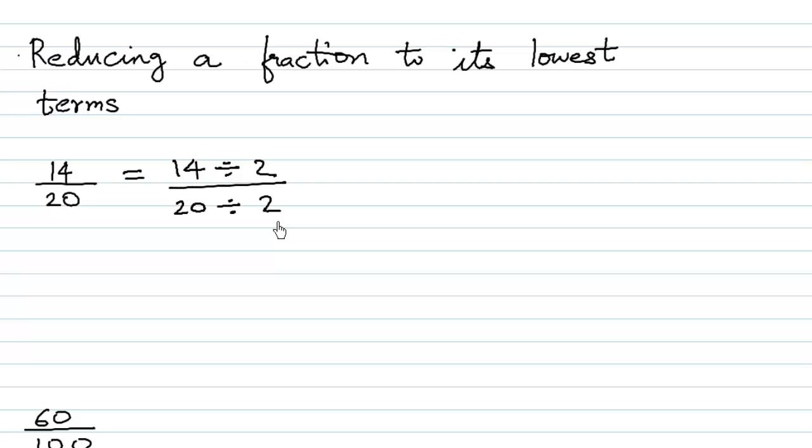Remember, we can multiply or divide both the numerator and denominator, but not by 0. So what is 14 divided by 2? It's 7, and 20 divided by 2 is 10. 7 and 10 are co-prime numbers.